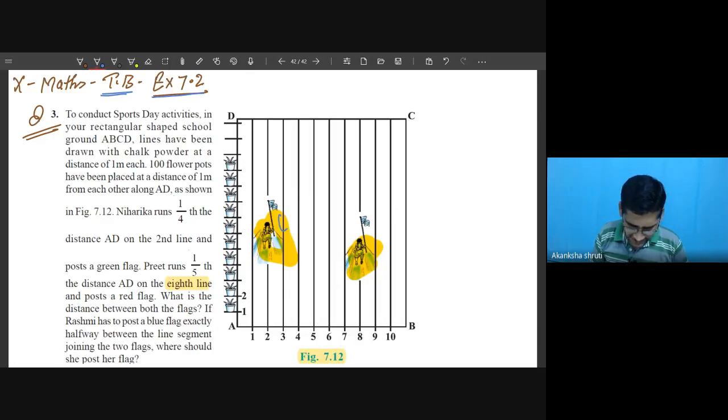Let me read this: to conduct a sports day activity in your rectangular school ground ABCD, lines have been drawn with chalk powder at a distance of one meter. This is one meter, one meter like this, so you are getting this way. It is your 10 meter, you have to consider this as x-axis.